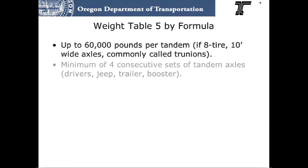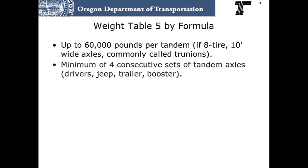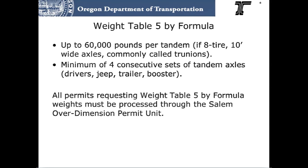Weight Table 5 by formula permits allow up to 60,000 pounds on a tandem axle when hauling a single, non-divisible load. The same requirement of at least four consecutive sets of tandem axles applies. In addition, the axles must be 10 feet wide and have eight tires per axle. These moves require a single trip permit issued by ODOT staff.